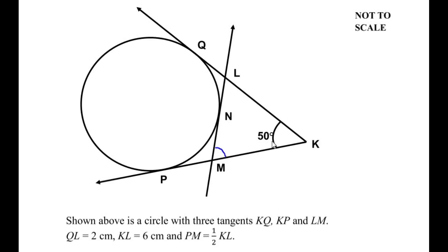Let us begin by writing the values given here. QL is given as 2 centimeters, KL is 6 centimeters, and PM is half of KL. Since KL is given as 6 centimeters, PM is half of 6, which becomes 3 centimeters.